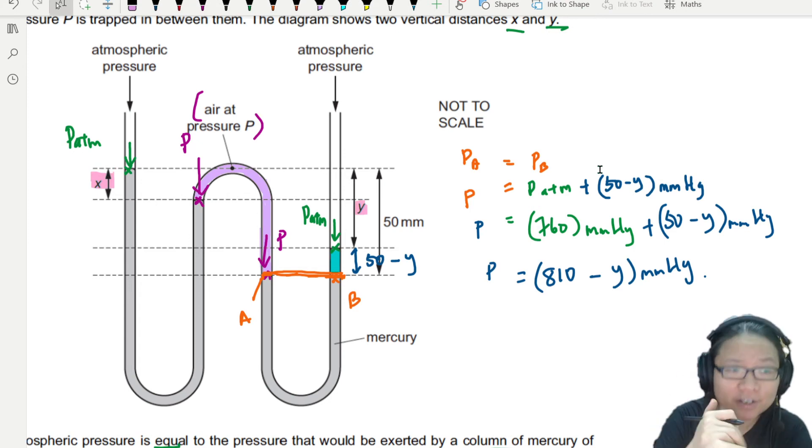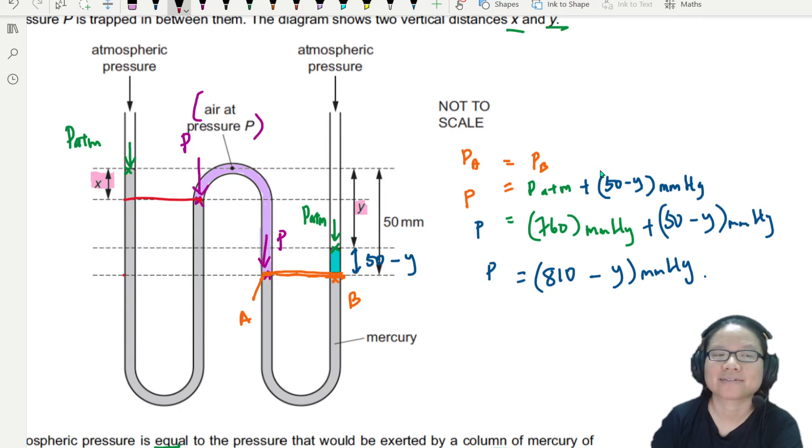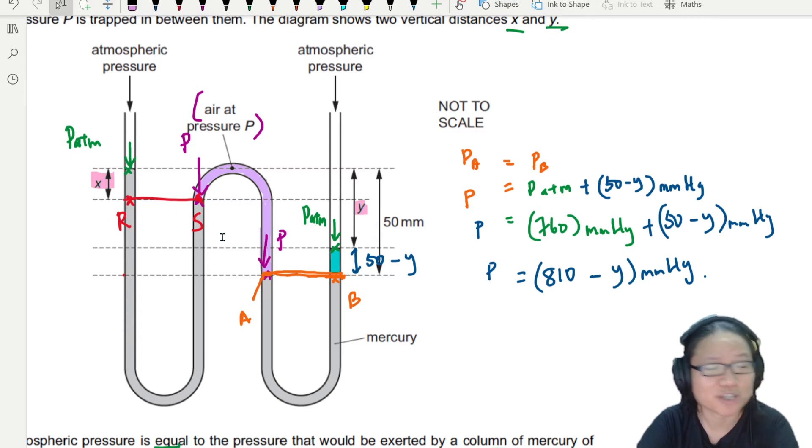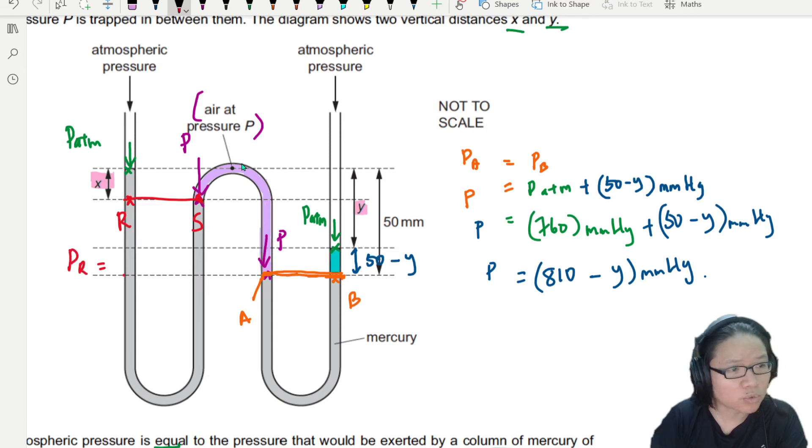But is there another level where the pressure is equal? Well, yes. I'm happy you asked. The other level is here. Where do you want to use? Do you want to use here? Teacher, can I? Can. Same height, same pressure. Of course, A and B and these two points, let's call it something else. Cannot call Y and Z because Y is being used. What alphabet should I use? I have R and S. Point R and point S. So at point R and point S, the pressure is the same because again, same height.